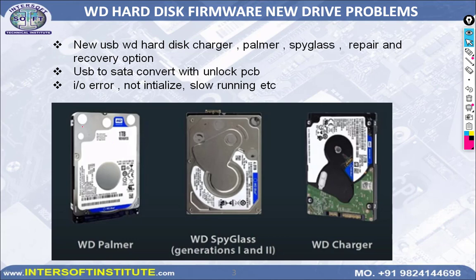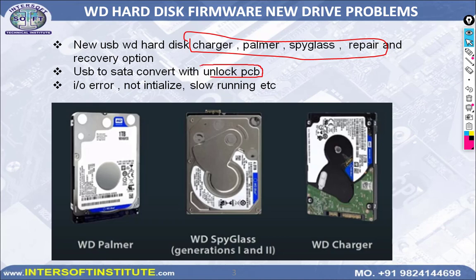Nowadays new hard disks — the Palmer, Charger, and their families — have common issues. WD company has made a lock in the CPU so no one can access the firmware and repair the hard disk. To access the firmware, we need an unlock PCB and convert USB to SATA. These new hard disks are most commonly used by photographers and professionals, including Palmer Spyglass 1 and 2, Charger, Apollo, and more.